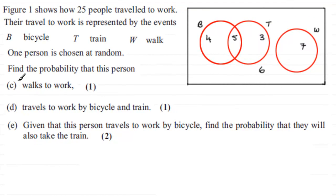Hi. Now I've grouped together parts C, D, and E of this question because it's all on probability for this Venn diagram. If you haven't tried this already, you might like to just pause the video and have a go. Well, let's see how you got on. Just to recap once more, this figure shows how 25 people travel to work. Their travel to work is represented by these events: B for cycling to work, T for train, and W for walking. We're told now that one person is chosen at random and find the probability that this person in part C walks to work.